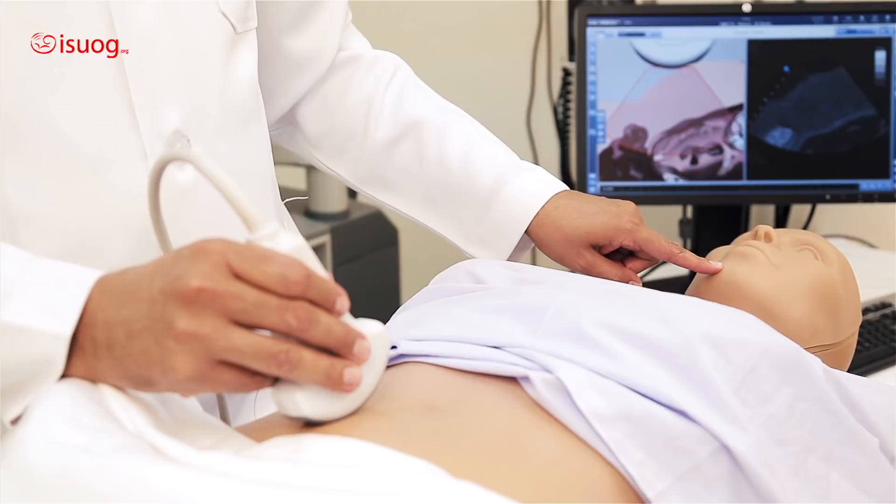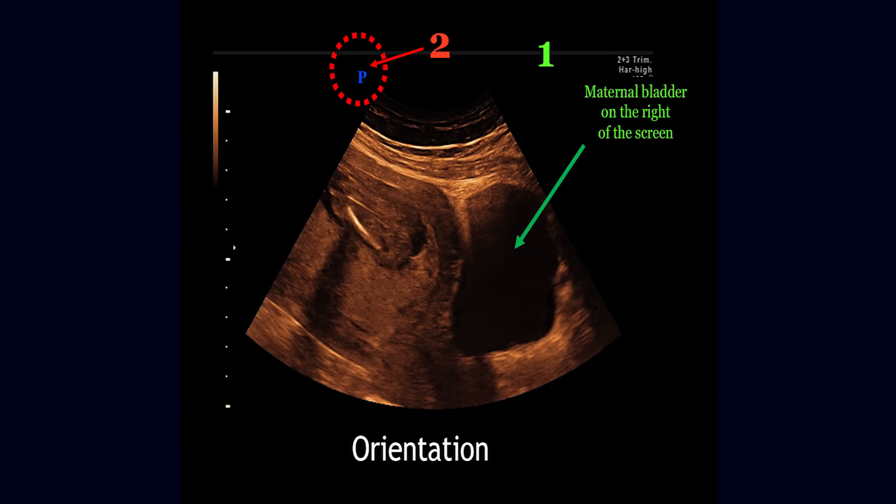The second way is when you look at the screen — the maternal bladder should always be at the right side of the screen. And if you look carefully at the screen, you will find there's a mark. It could be a green dot, a blue dot, or even a dot with the word P. Make sure that this mark is always on the left side of your screen.